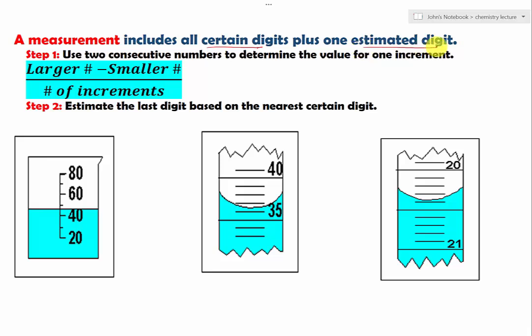All measurement will include all certain digits that label on the instrument plus one estimated digit. There are two steps. The first step is to determine the values of one increment by using two consecutive numbers on the instrument.